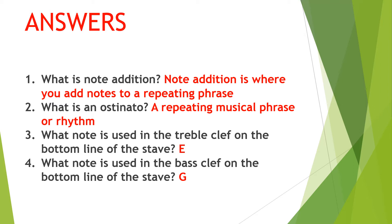So what is note addition? Note addition is where you add notes to a repeating phrase — it could be as small as making one change where you just add one note each time. Number two: what is an ostinato? An ostinato is a repeating musical phrase or rhythm. Number three: what note is used in the treble clef on the bottom line of the stave? It's an E — remember, on the bottom line. And number four: what note is used in the bass clef on the bottom line of the stave? It's a G — remember, on the bottom line.